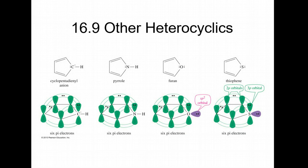Section 16.9 covers other heterocycles or heterocyclics. Remember, a heterocycle is a compound that has a non-carbon atom inside the ring. This compound is not technically a heterocycle because there's a carbon group, but all these are aromatic.